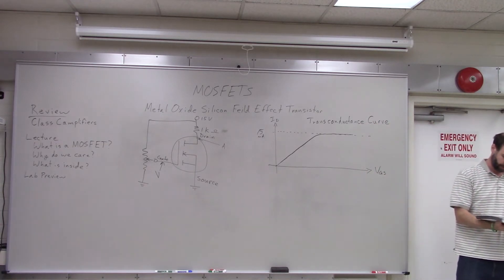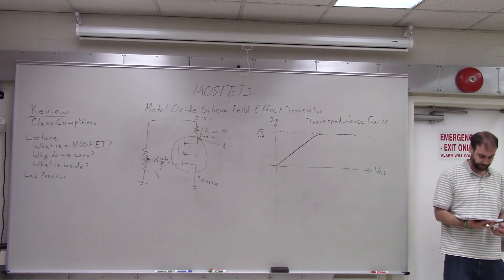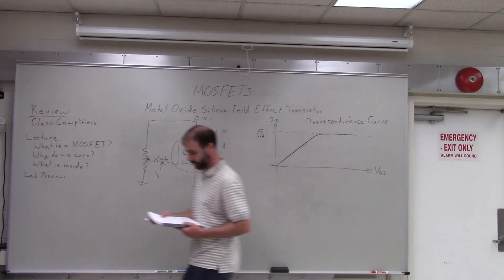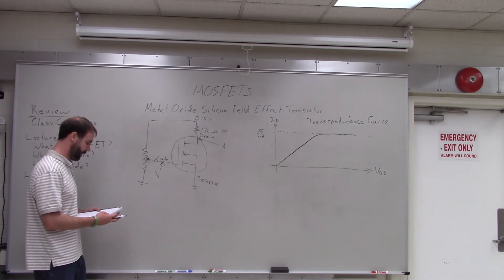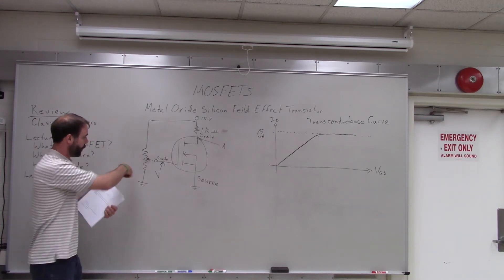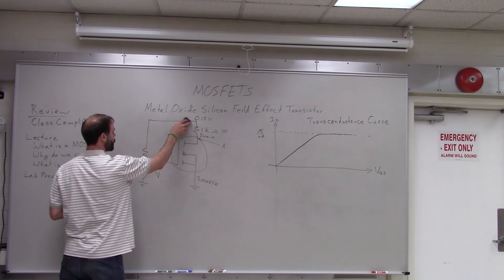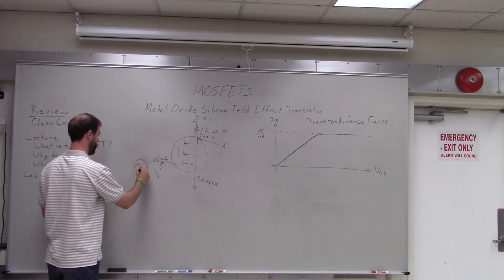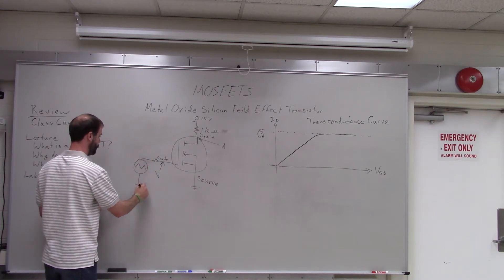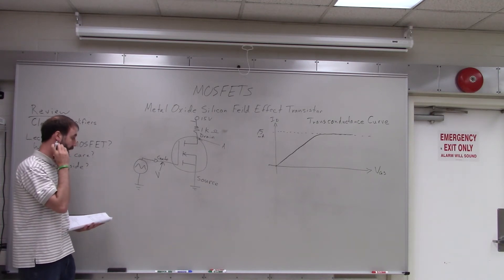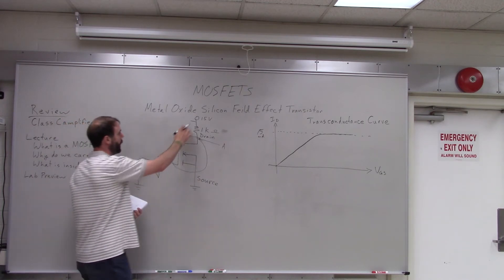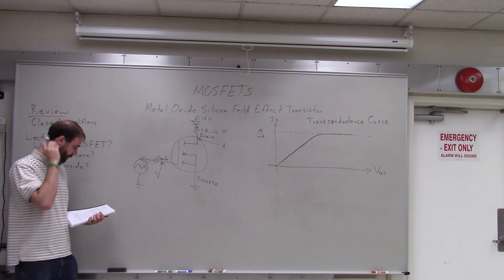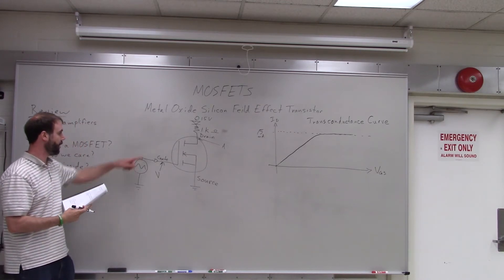You're going to plot your results on a graph in your lab book — making your own transconductance curve. For the next part of the lab, you'll have a very similar circuit, except instead of using a potentiometer to create the voltage at the gate, you'll use a function generator to create a triangle wave voltage. You'll have a diode in the circuit, so you should see the diode going on and off. You'll measure the voltage at the gate and also the voltage at the drain.